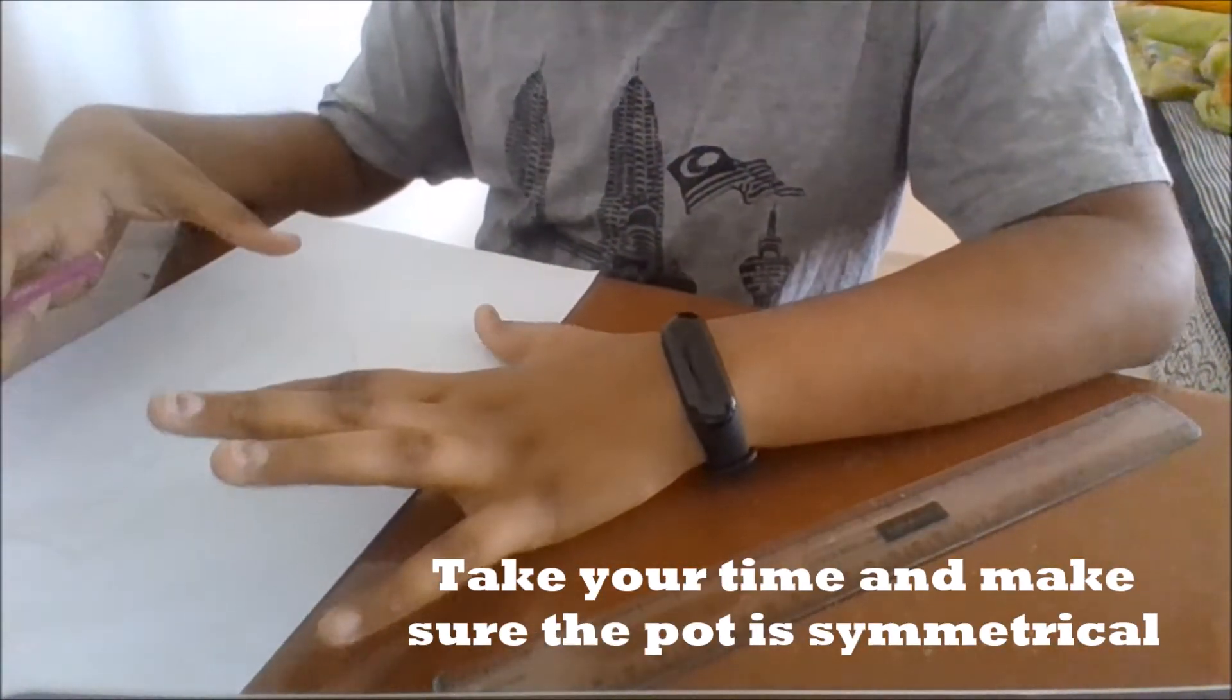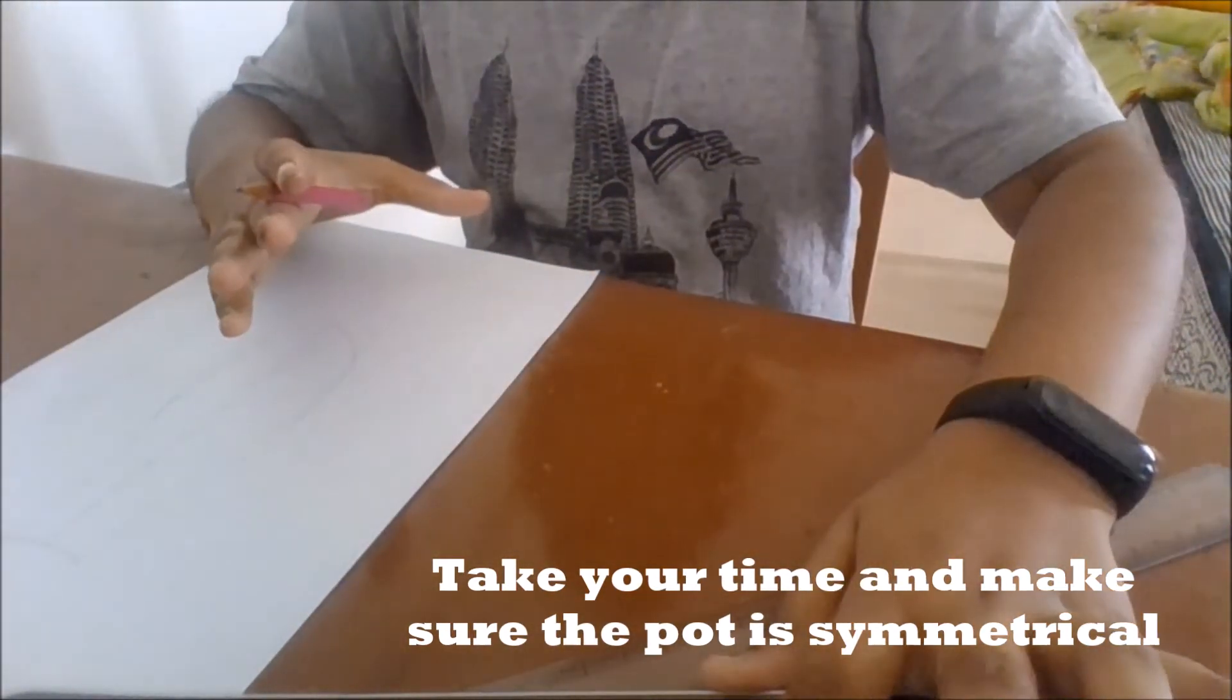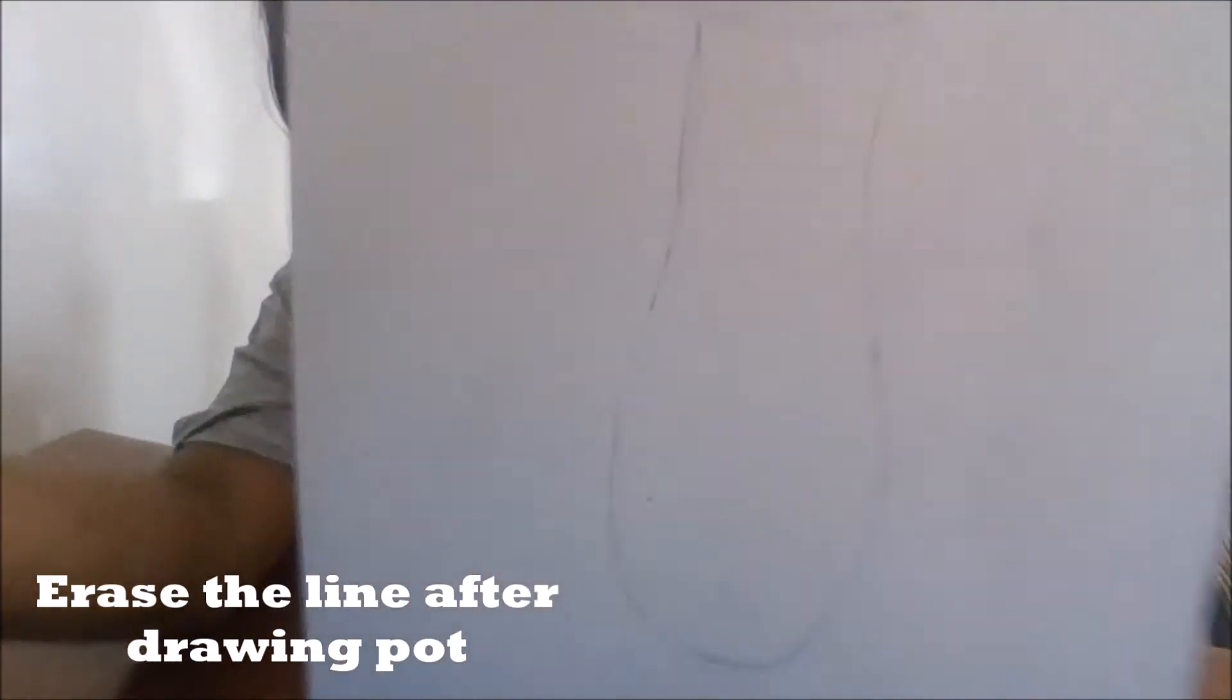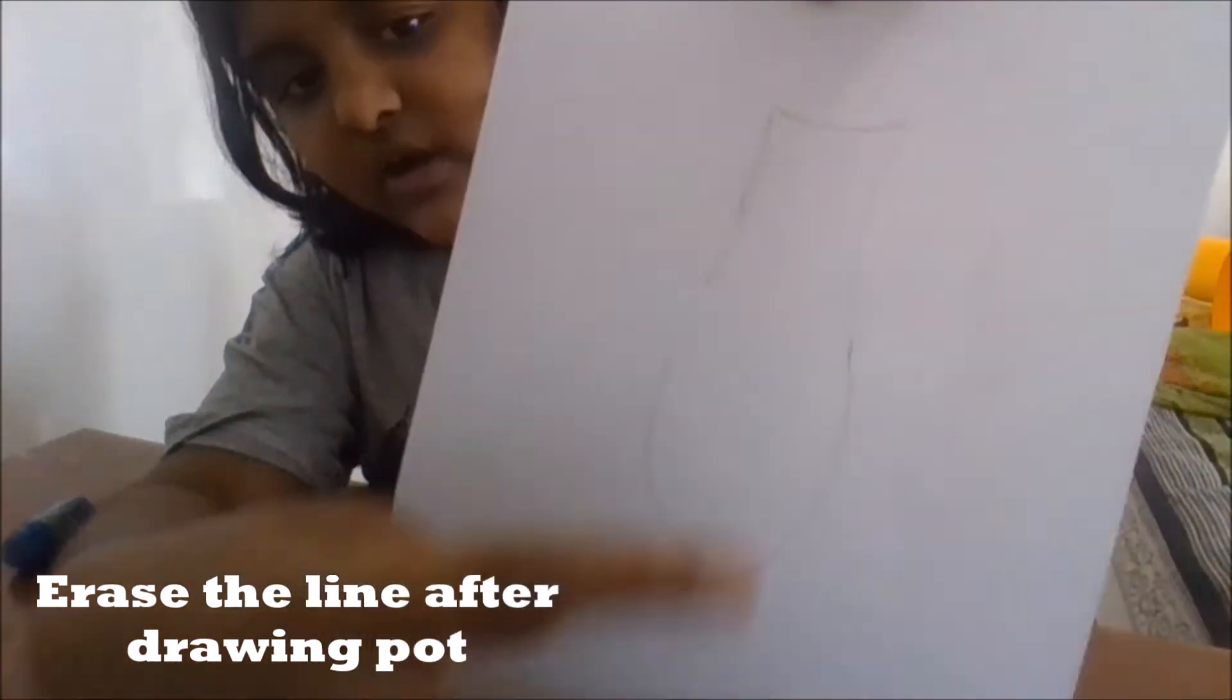Now take your time and make sure the pot is symmetrical because this will need a lot of practice to get right. Okay, so we are done with drawing the pot. Now erase the reference line we drew earlier for the pot.